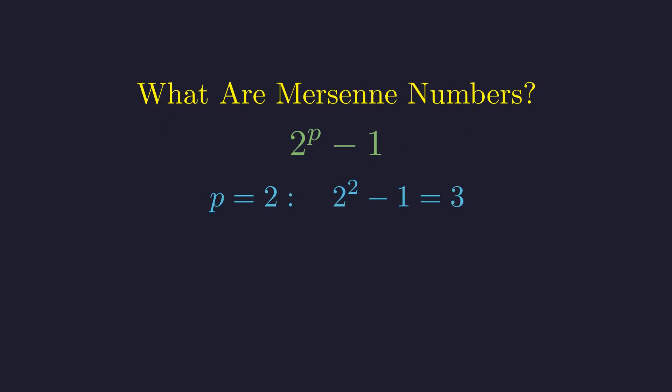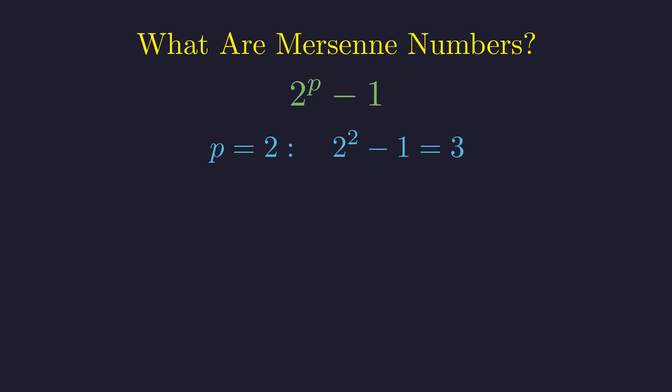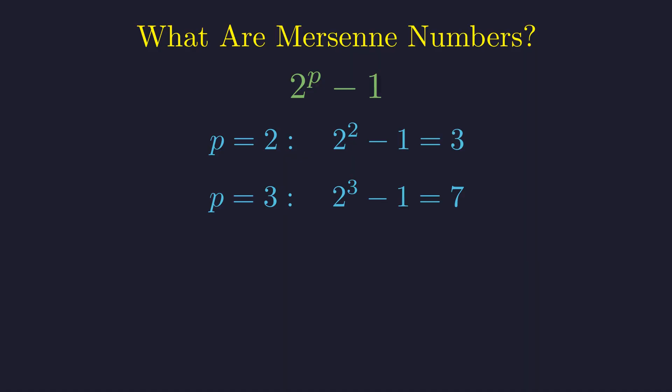For example, if p equals 2, we get 2 squared minus 1 equals 3, which is prime. If p equals 3, we get 2 cubed minus 1 equals 7, also prime.